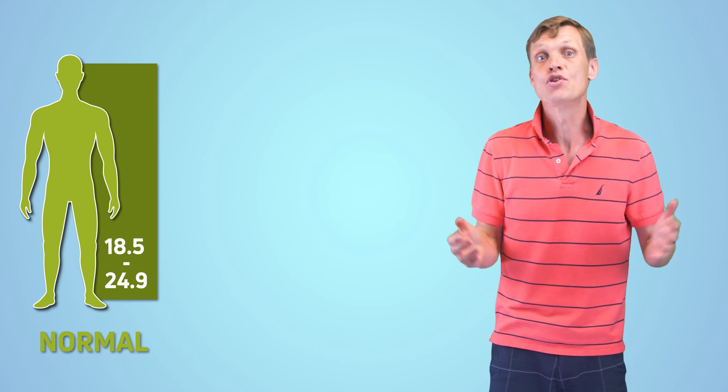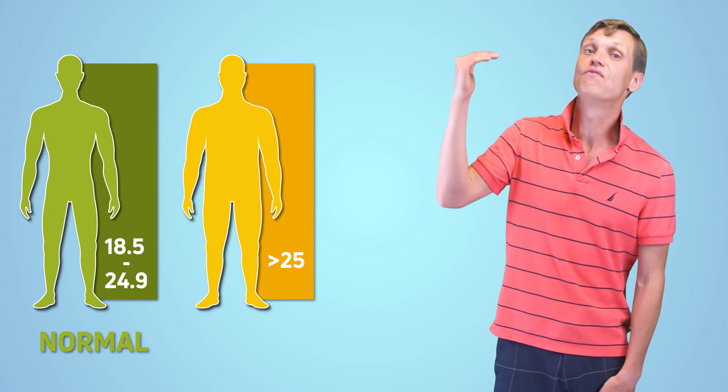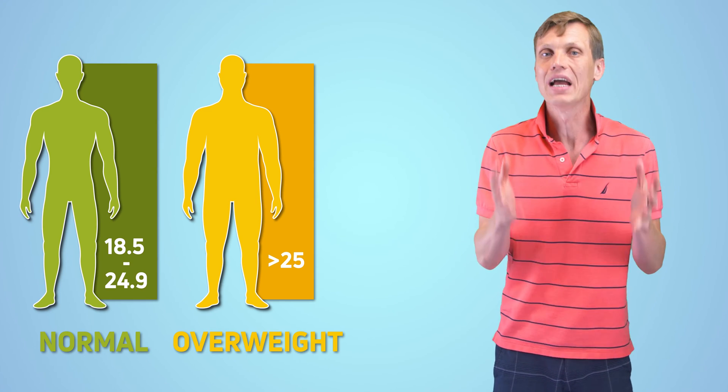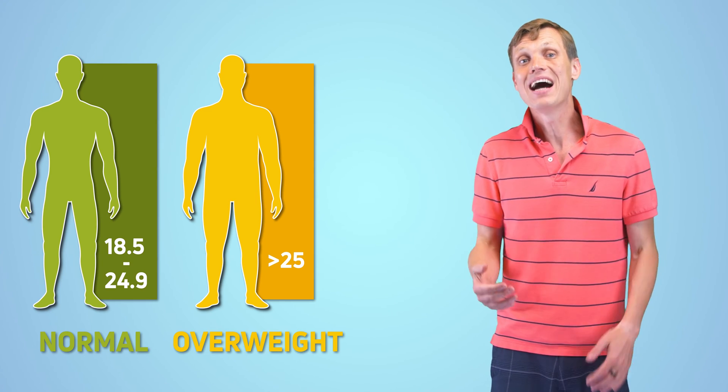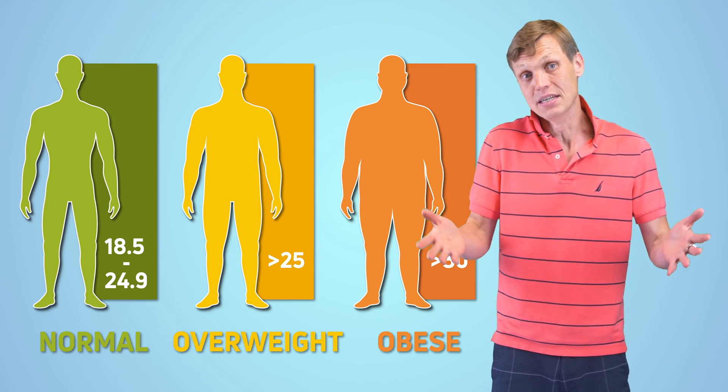If the result is between 18.5 and 24.9, then congratulations! Your weight is within the normal range. If your BMI is above 25, then you are in overweight range. Or if your BMI is above 30, then sorry to break it to you, but you are technically obese. Obesity is basically a more severe form of being overweight.